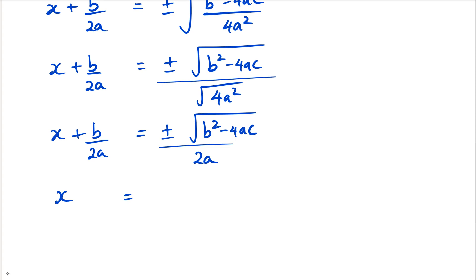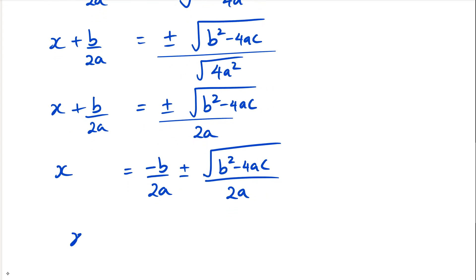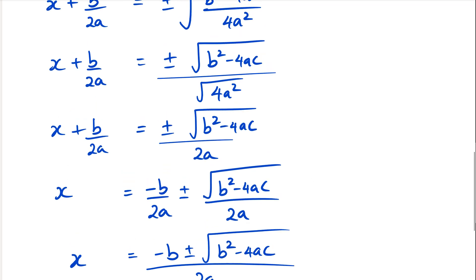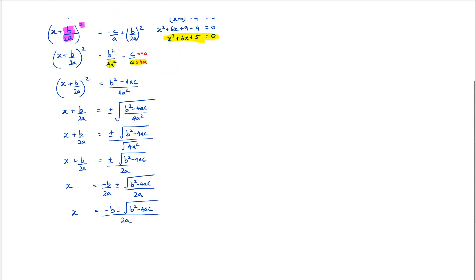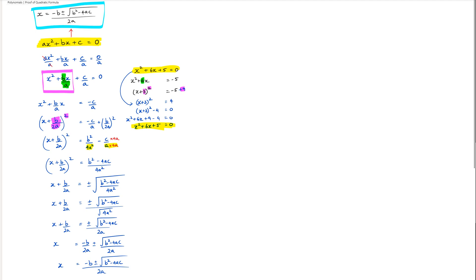Finally, x equals minus b/(2a) plus or minus √(b² − 4ac) / (2a). Since 2a is the common denominator for both terms, we can write this as x = (−b ± √(b² − 4ac)) / (2a). And that's basically how you derive the quadratic formula from the quadratic equation — the formula in the blue box at the top matches the blue box at the bottom.